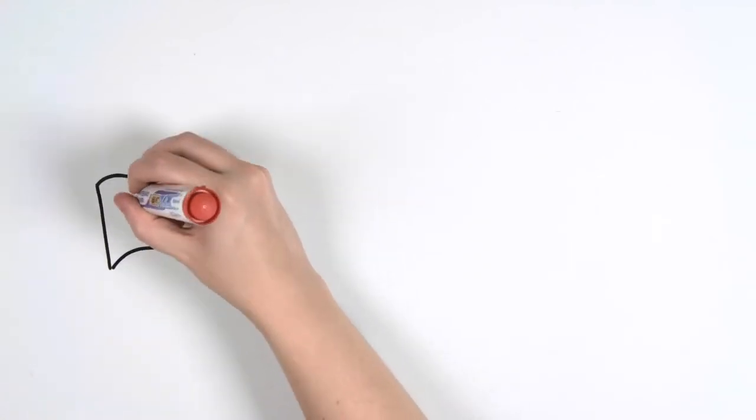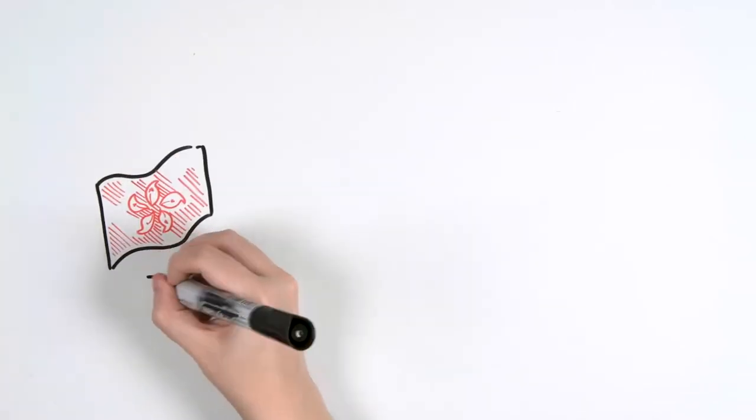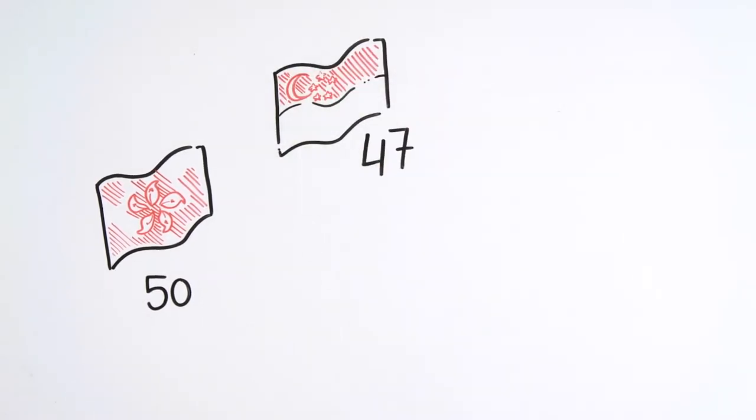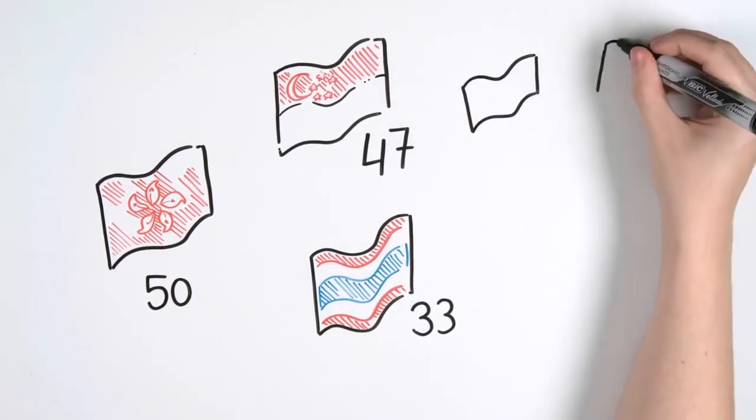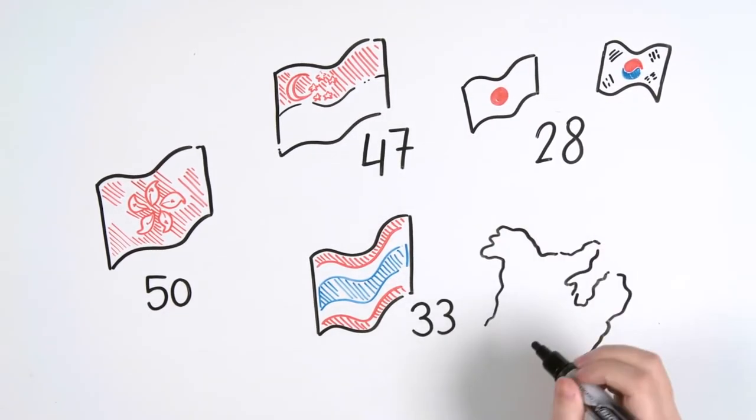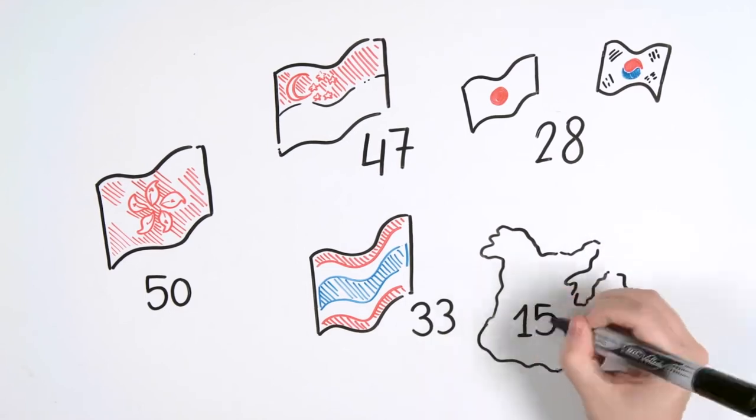The second most infected country is Hong Kong with 50 cases, then Singapore with 47 cases, Thailand with 33, and 28 confirmed in Japan and South Korea. Cases have also been reported in several European countries, in the US and Canada.